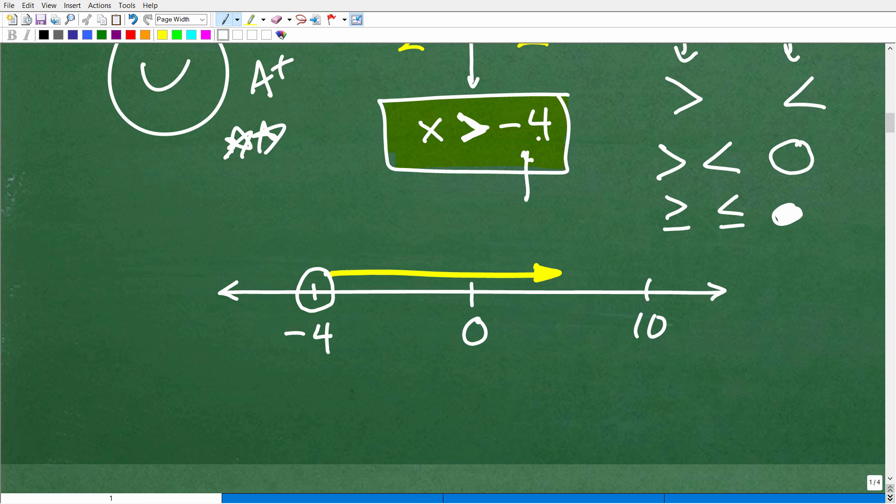So you want to draw your arrow in that direction. Okay? So this is all the numbers right here going to infinity that are greater than but not equal to negative 4.